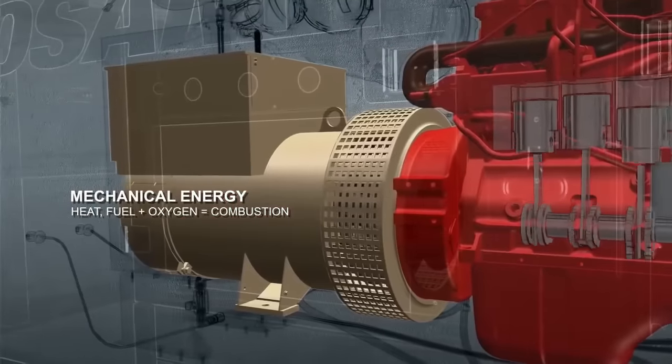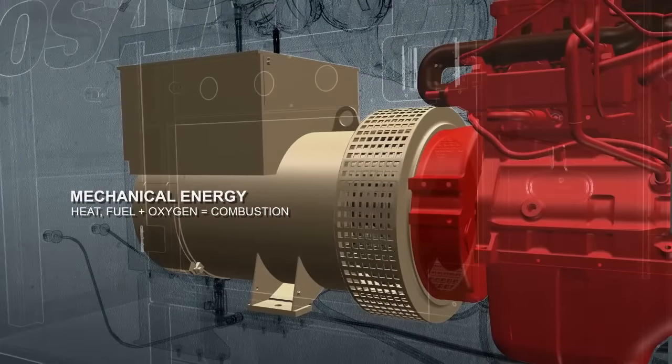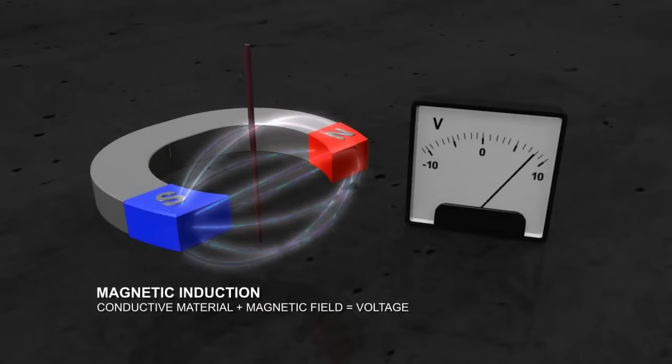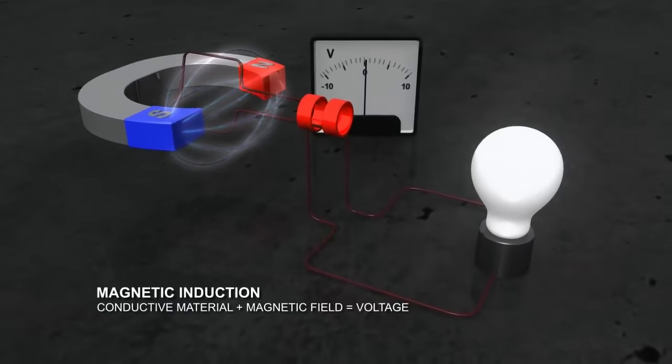An alternator converts mechanical power into electrical energy in a process called magnetic induction. Magnetic induction occurs when a conductive material such as a copper wire passes through a magnetic field and voltage is produced. If the wire is connected in a complete circuit, the power can be transmitted.